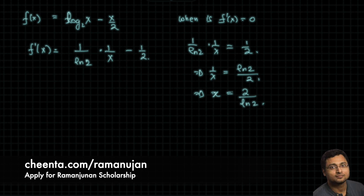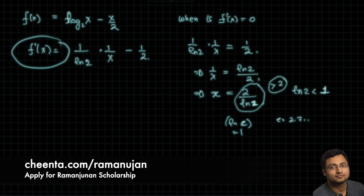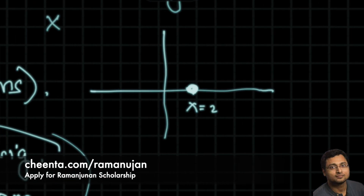Notice that ln e equals 1, and e is approximately 2.7. So ln 2 is less than 1, which means 2 over ln 2 is greater than 2. So at x equals 2 over ln 2, which is greater than 2, the first derivative becomes zero. We can mark this point on the graph: at x = 2/ln 2, the derivative is zero.